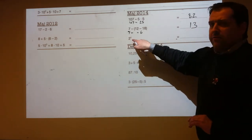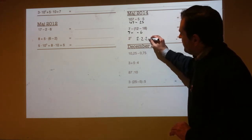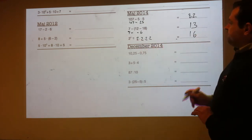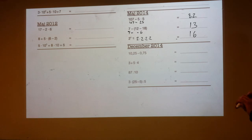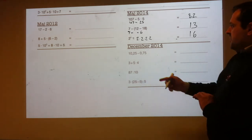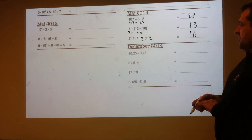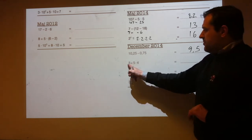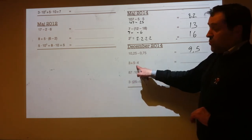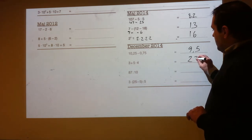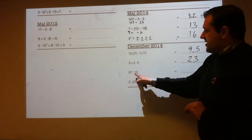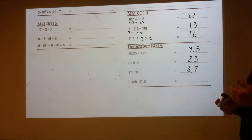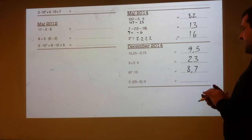2 to the power of 4 means 2 times 2 times 2 times 2: that's 2, 4, 8, 16. Here's one with decimals: 10.25 minus 0.75 is 9.5. 3 plus 5 times 4 is the same as 3 plus 20, because you do the multiplying first, which is 23. 87 divided by 10: dividing by 10 just shifts the decimal along, so that's 8.7.